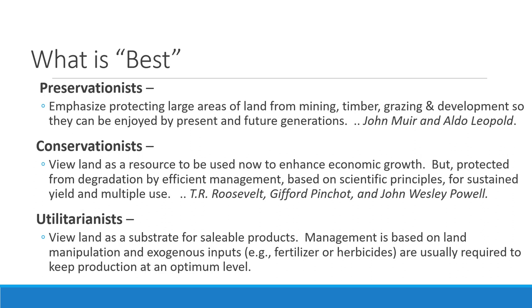Utilitarianism is the idea that what we need to do is use land as a substrate to make money from saleable products. Management is based on manipulation and reducing exogenous inputs such as fertilizers and herbicides, usually keeping production at an optimal economic level. When we talked about the history of range management — homesteaders and people trying to prove up a piece of land — I would say they were mostly utilitarianist: they needed to make a living for their family and their community.